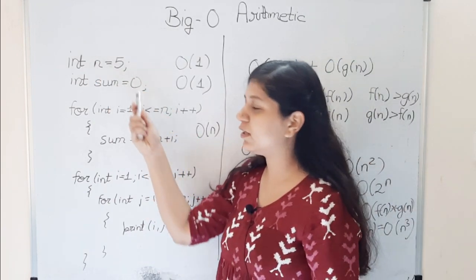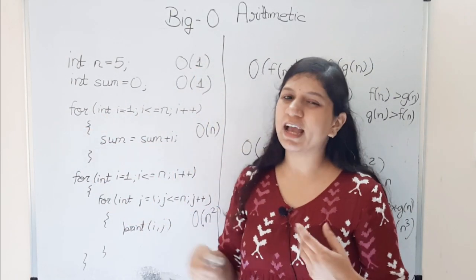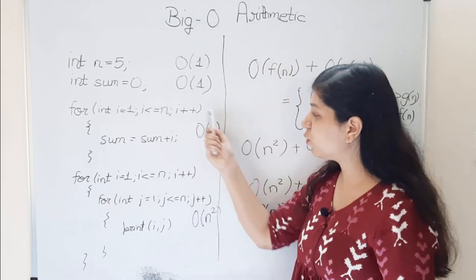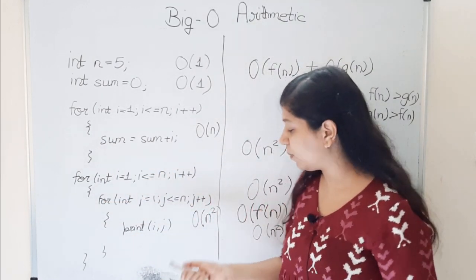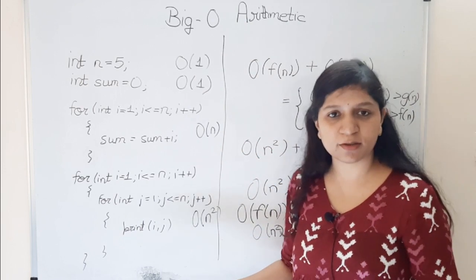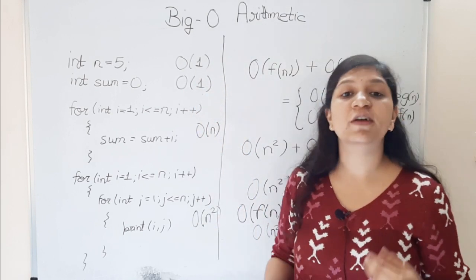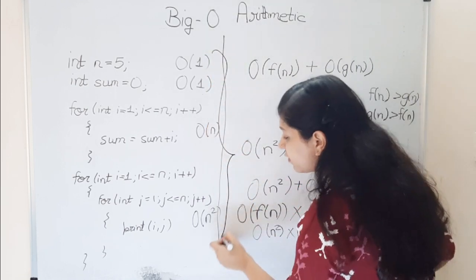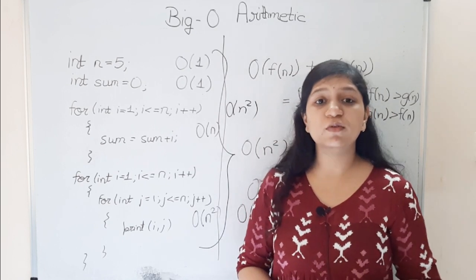Consider a code example: two constant-time declarations give O(1) + O(1); a single for loop gives O(n); a nested loop gives O(n²). Adding all these in terms of Big O: O(1) + O(1) + O(n) + O(n²). The highest function here is n², so the complete code gives O(n²). That's the arithmetic of Big O notation.